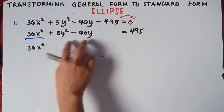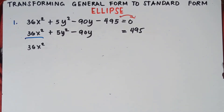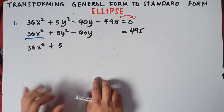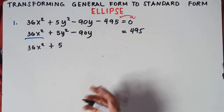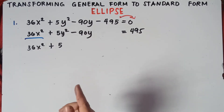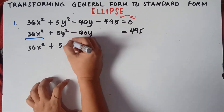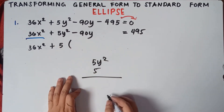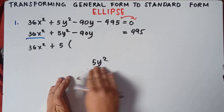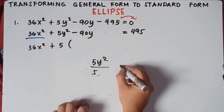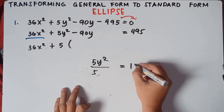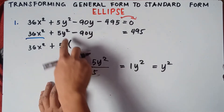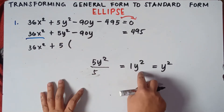Before doing completing the square, check if you can factor the numbers for the y variables. We can factor 5 and 90 by 5. So divide 5y squared by 5: 5 divided by 5 is 1, giving us y squared. That's the same as 1y squared or just y squared.